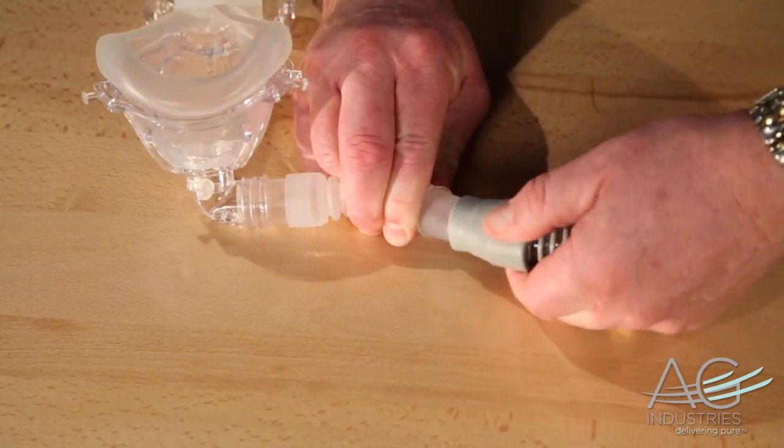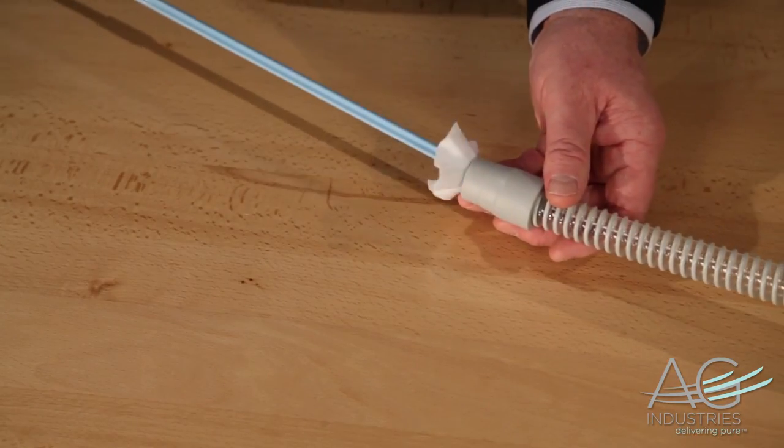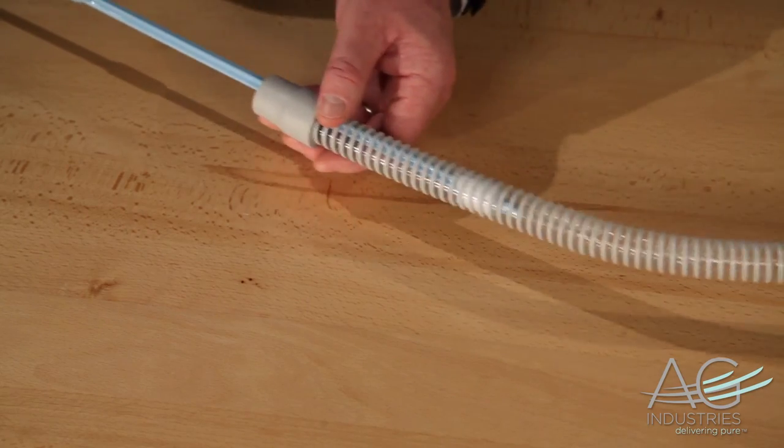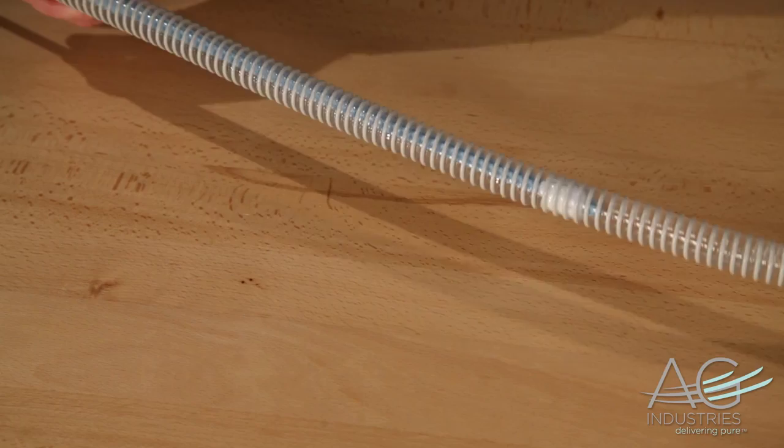After each use, disconnect the CPAP tube from your mask and machine. Insert the wand into one end of the tube, sliding back and forth in short motions down the length of the tube until the wand is fully inserted.